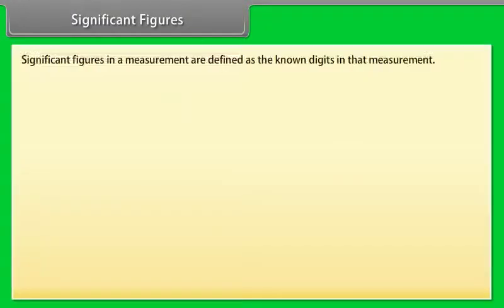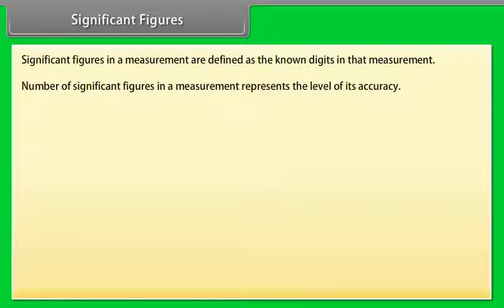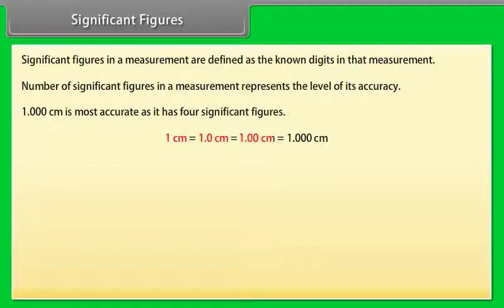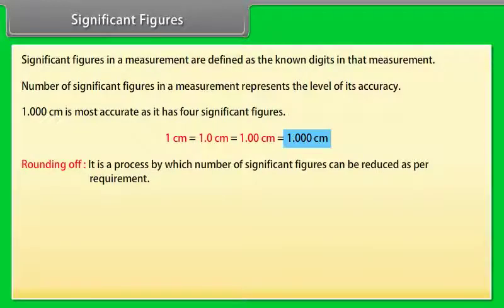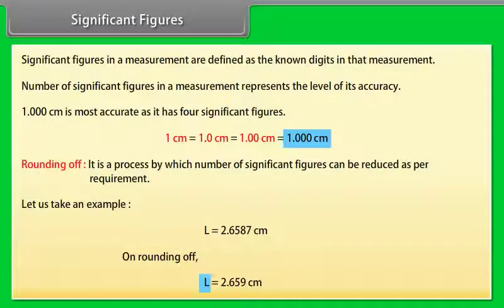Significant figures. Significant figures in a measurement are defined as the known digits in the measurement. Number of significant figures in a measurement represents the level of its accuracy. It means more the number of significant figures in a measurement, more accurate that measurement is. Let us take an example: 1.000 centimeter is most accurate as it has four significant figures. Rounding off: it is a process by which number of significant figures can be reduced as per requirement. Let us take an example: L equals 2.65887 centimeters. On rounding off, L equals 2.659 centimeter.